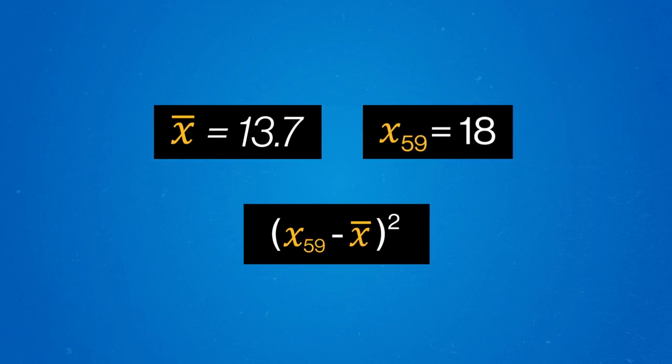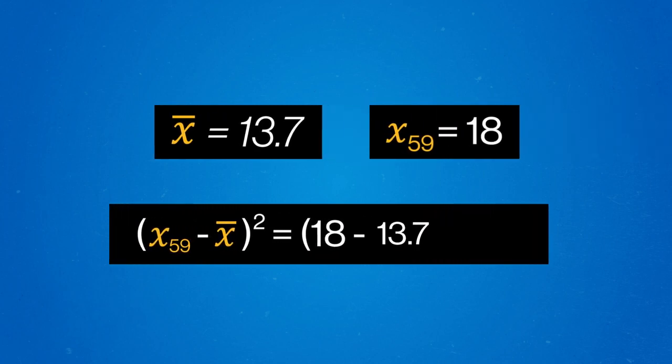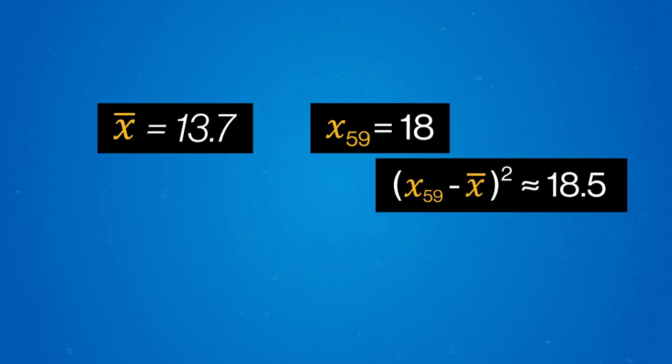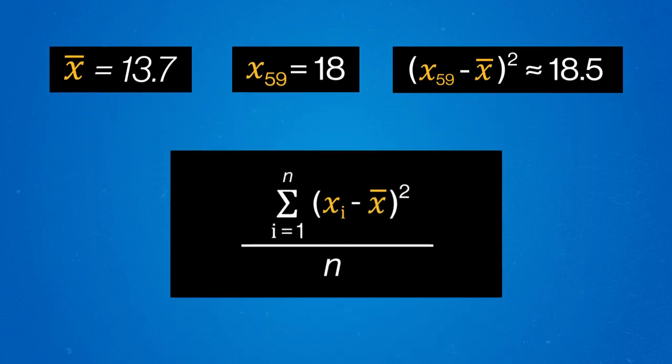For example, for data point X sub 59, we take the value of that data point, subtract the mean, and then square the whole thing. Then to get a sense of the average distance a data point is from the mean, we calculate another mean — this time the mean of all these squared distances for the data. Taking our formula for means from the previous episode and sticking in the squared distances we just calculated as the things we're adding up, we get something that looks very mathy.